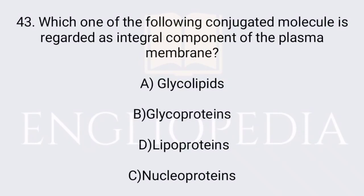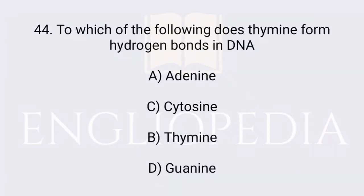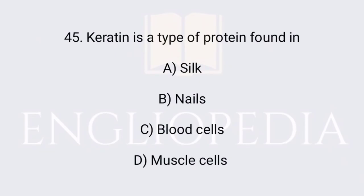Which conjugated molecule is regarded as an integral component of the plasma membrane? Glycoprotein is regarded as an integral component of the plasma membrane. To which of the following does thymine form hydrogen bonds in DNA? Thymine forms hydrogen bonds in DNA to adenine. Keratin is a type of protein found in nails.